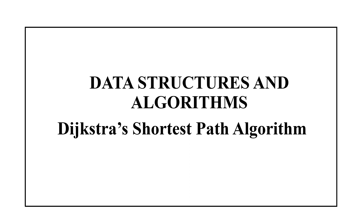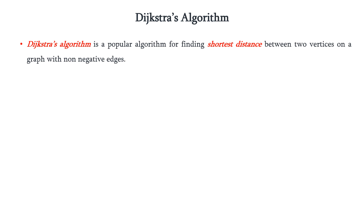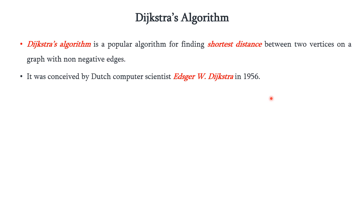Hello everyone. In this lecture we are going to discuss Dijkstra's shortest path algorithm, a concept from graphs in data structures. Dijkstra's algorithm is a popular algorithm for finding the shortest distance between two vertices on a graph with non-negative edges — that is, edge weights should only be positive numbers. This algorithm was invented by Dutch computer scientist Edsger W. Dijkstra in the year 1956.